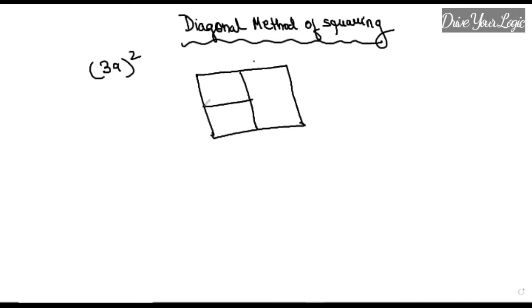So four chambers in this way. I write 3 here, 9 here, 3 here, 9 here, and diagonally I will make a box in this way.